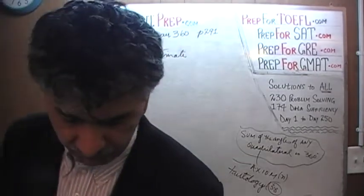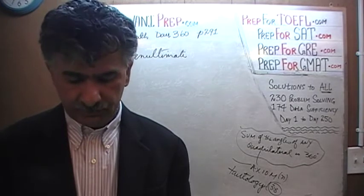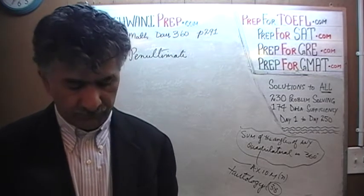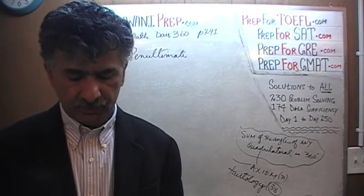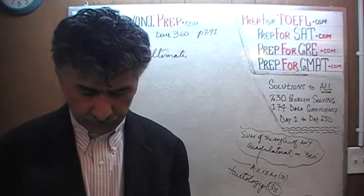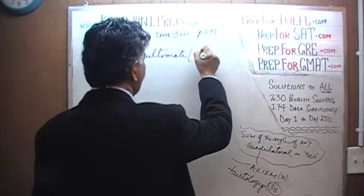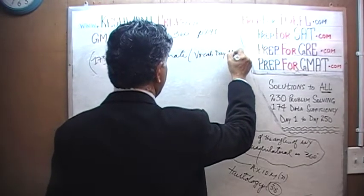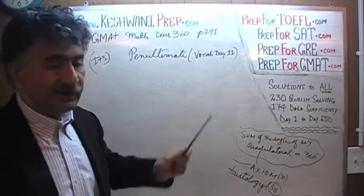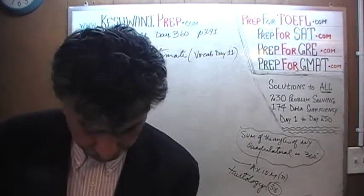The penultimate question — as we have learned this word on several different occasions — is simply a very fancy way of saying second to the last. We are on 173 now, and this is a momentous occasion because there are only 174 of them. If you're interested in improving your vocabulary, just type in 'GMAT vocabulary words day 11' and you will see the video where we learned about penultimate and other useful words.